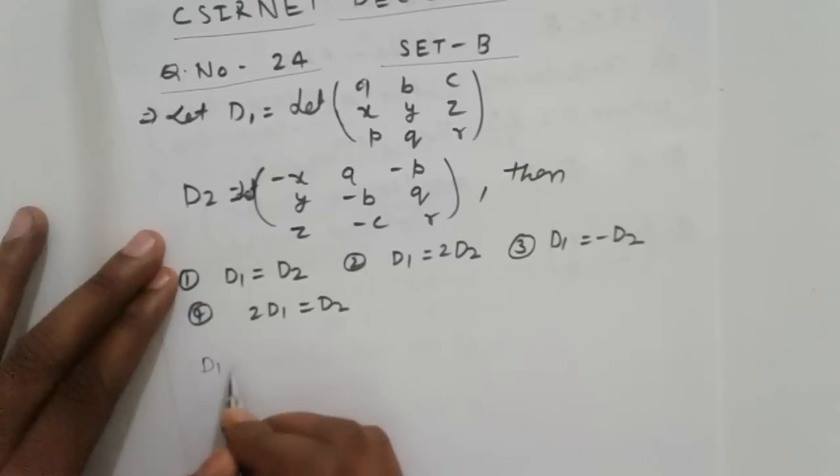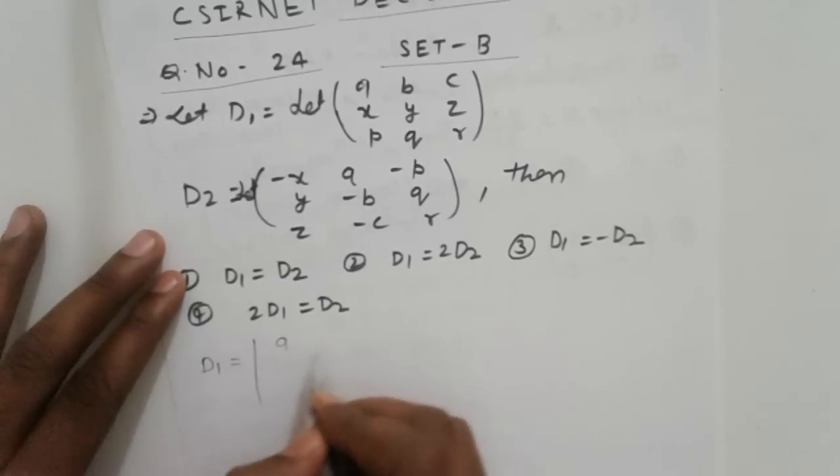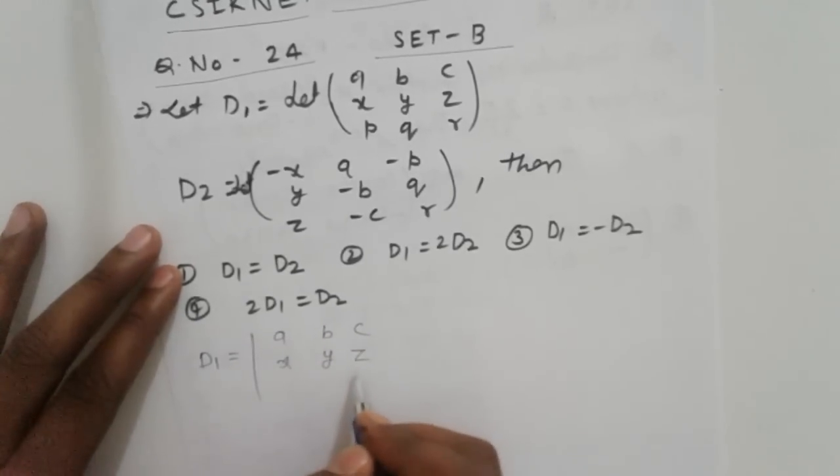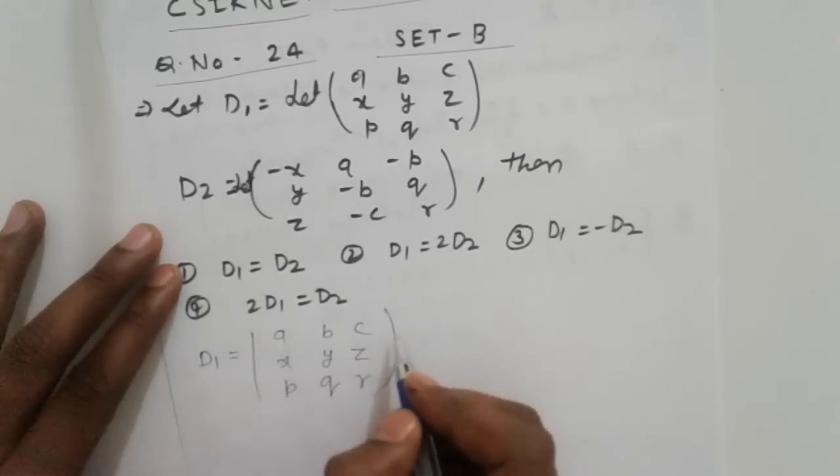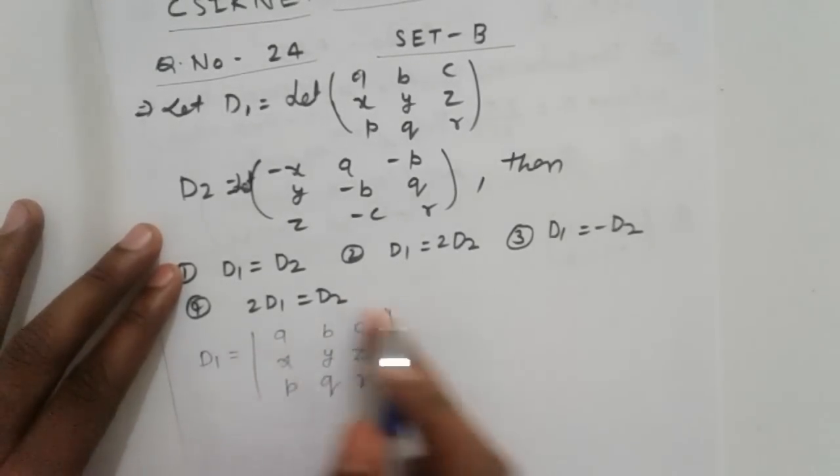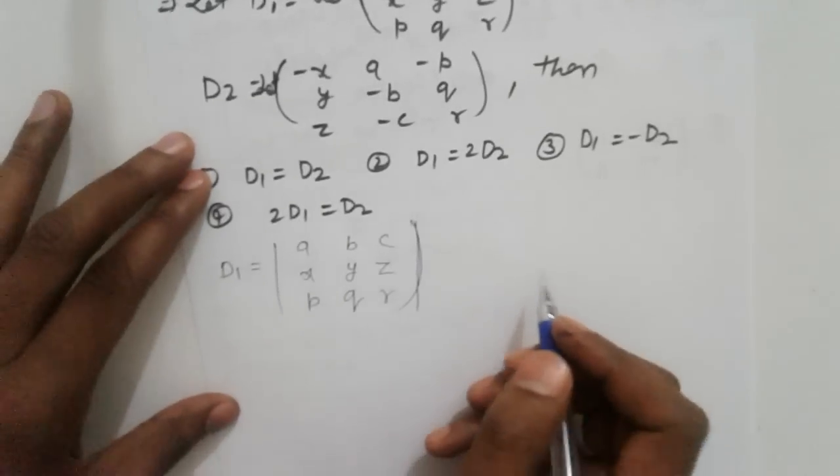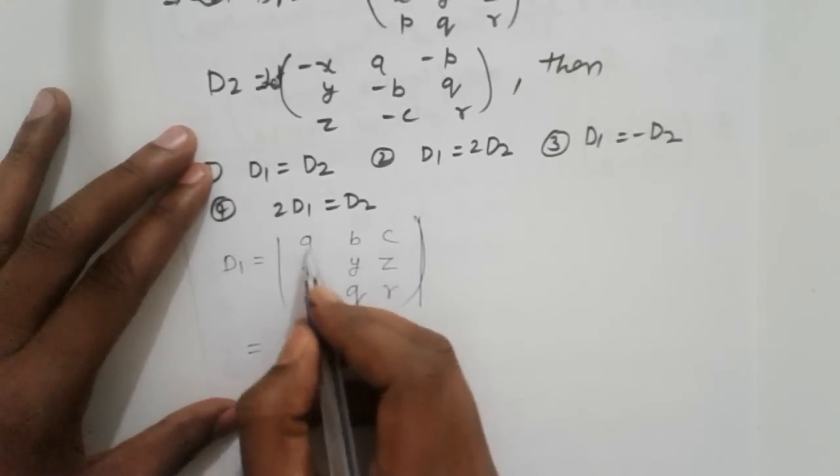D1 equals the determinant of matrix A with elements A, B, C in the first row, X, Y, Z in the second row, and P, Q, R in the third row. Now we expand according to the first row.